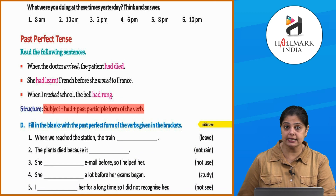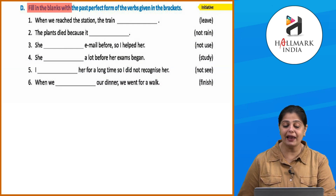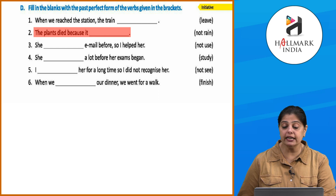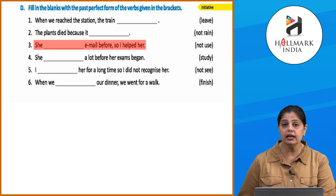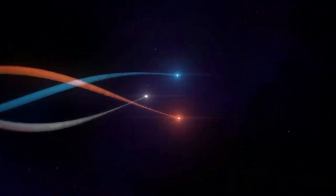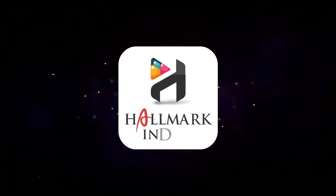Now let's do this exercise to understand the concept well. Fill in the blanks with the past perfect form of the verbs given in brackets. 'When we reached the station, the train had left.' 'The plants died because it had not rained.' 'She had not used email before, so I helped her.' Quickly complete the remaining sentences. Always remember — re-read this chapter before you attempt any of the exercises, and do practice a lot.